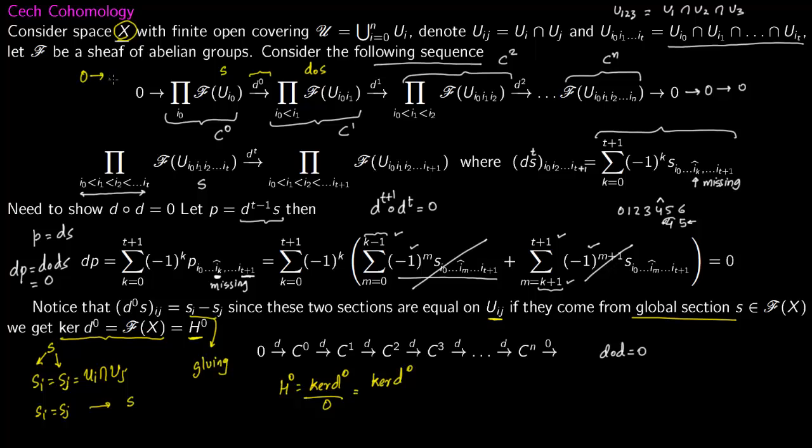So this H^0, the 0th cohomology group, is always the global sections, and that is precisely why we dropped F here. In the previous examples of the circle we had F here, so we just dropped this. You drop it and recover it because of the gluing condition—you recover it as the kernel of the map.